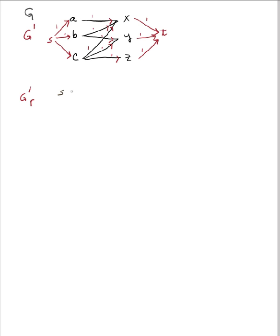How about S goes to X goes to T? The bottleneck for all paths we're dealing with — because every single edge has a capacity of 1 — is obviously 1, the minimum of 1 and 1 and 1. So the bottleneck is 1.